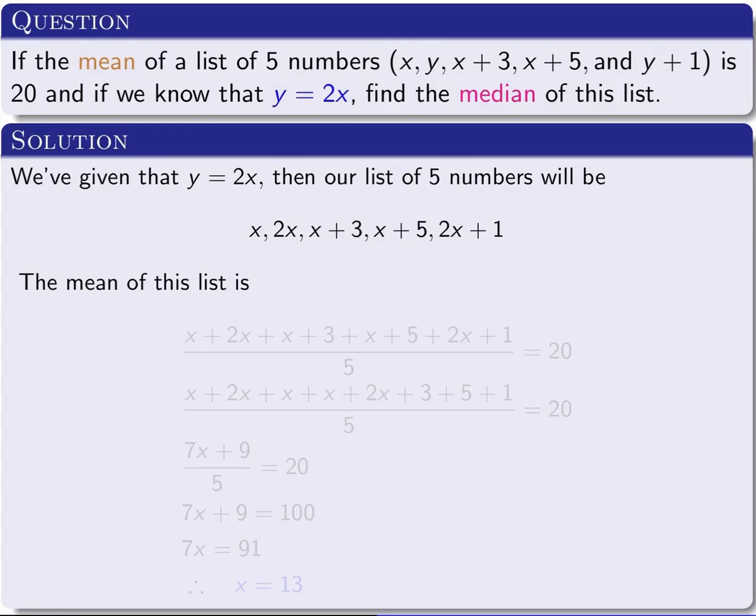The mean of a list of numbers is just the sum of these numbers divided by how many of them are in the list. So we have (x + 2x + x+3 + x+5 + 2x+1) divided by 5 equals 20, because we're given that the mean is 20 in the question.